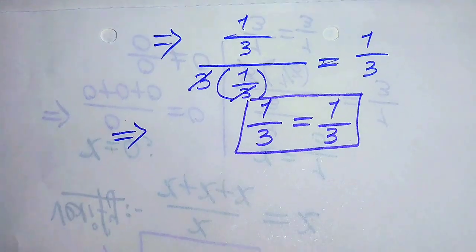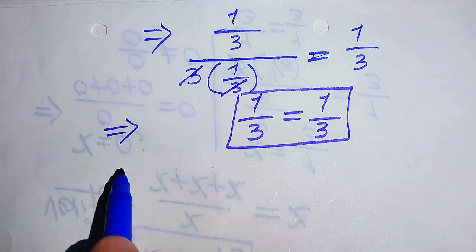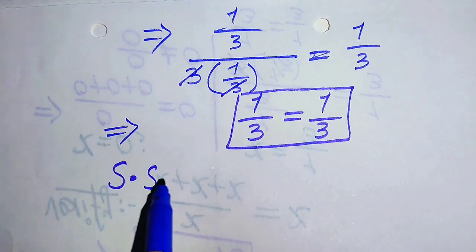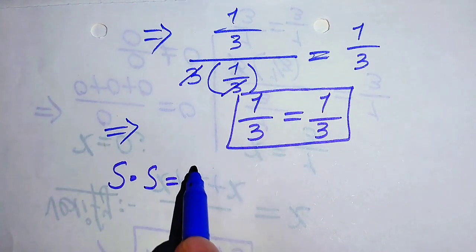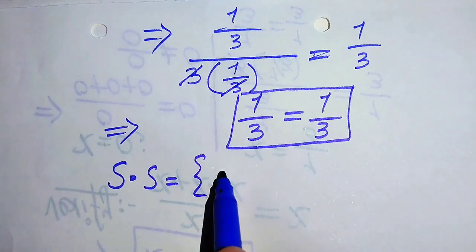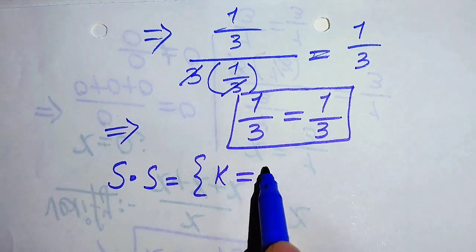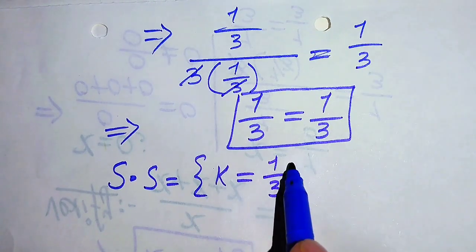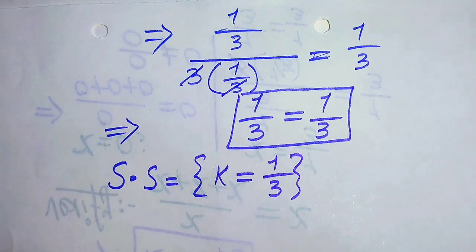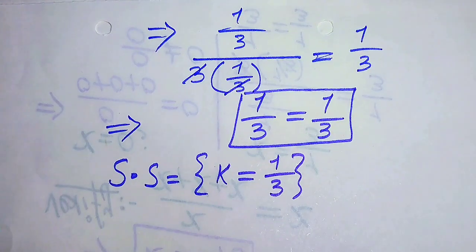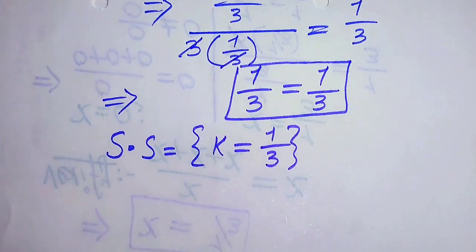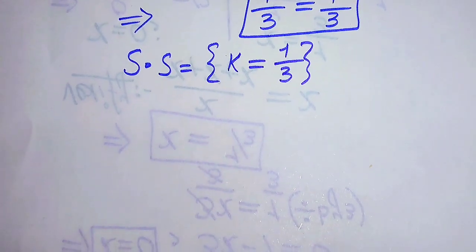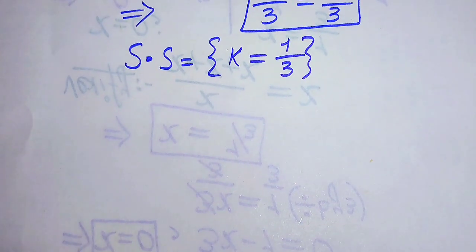Since both sides are equal, k equals 1/3 satisfies the given equation. Therefore the solution set of this problem is k equals 1/3, which is the only solution obtained from the first method.